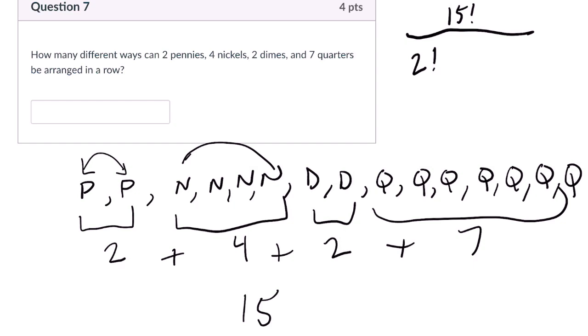There are four factorial ways of arranging these nickels. Divide by that. Two factorial ways of arranging those dimes, and then seven factorial ways of arranging those quarters.